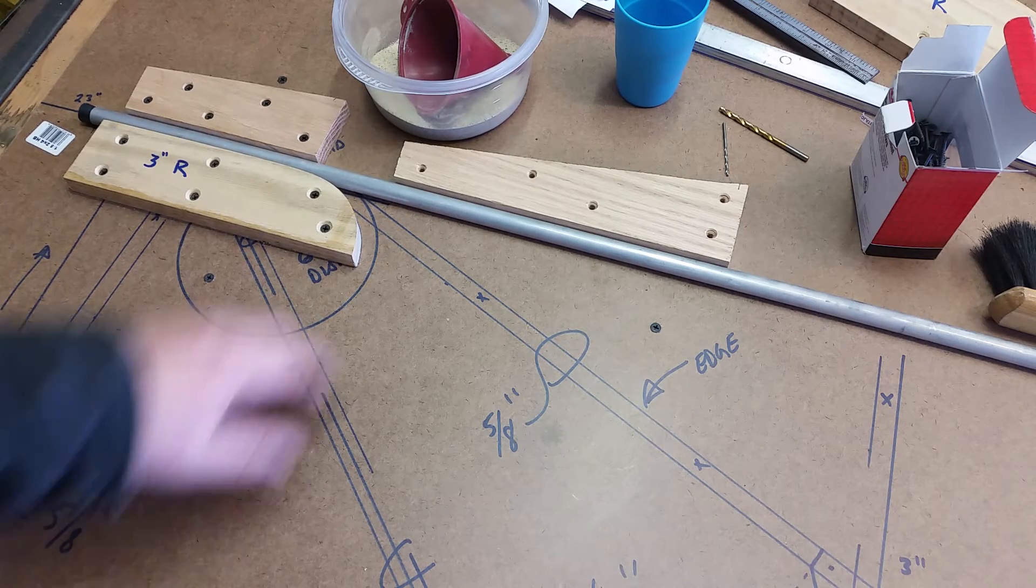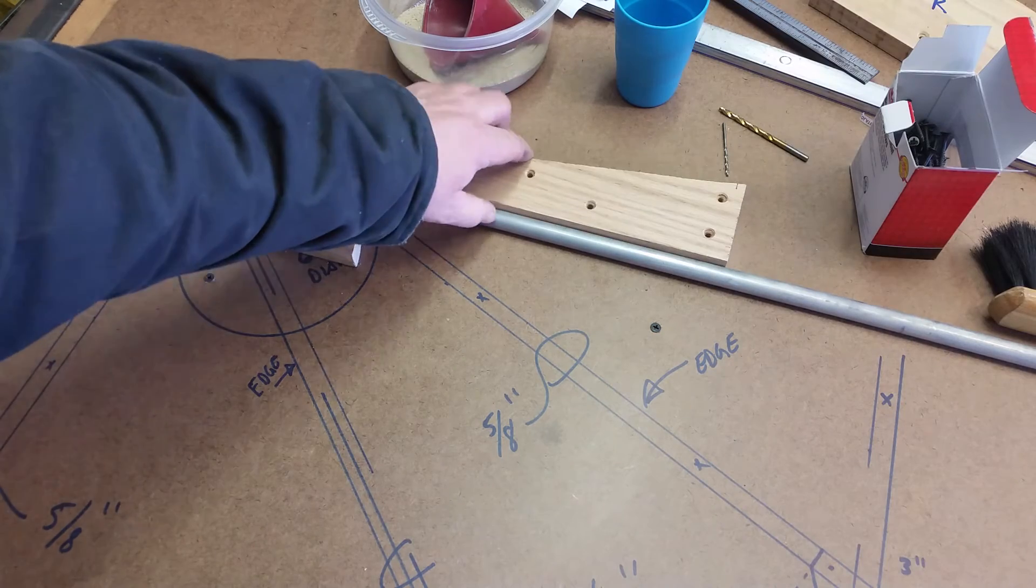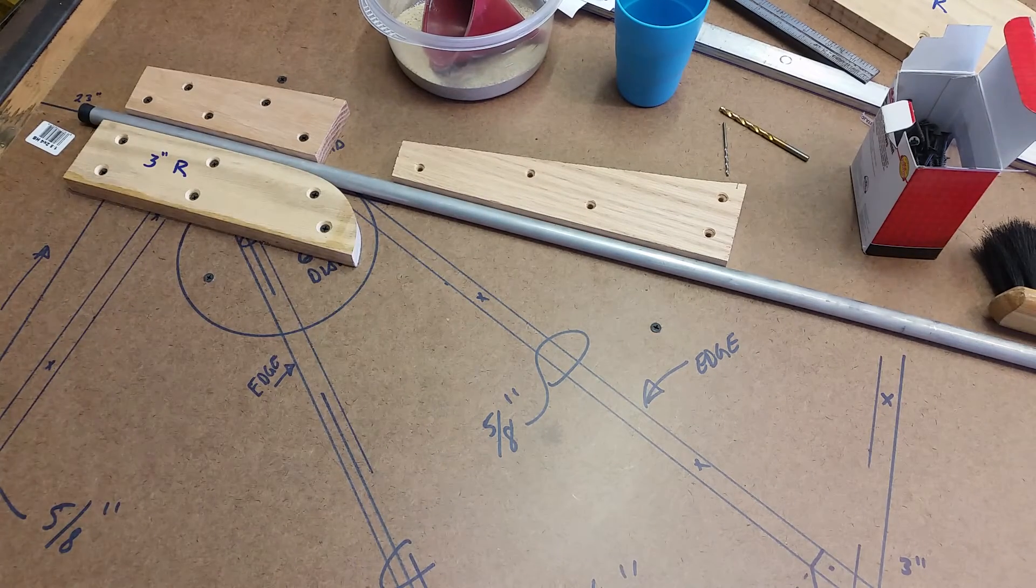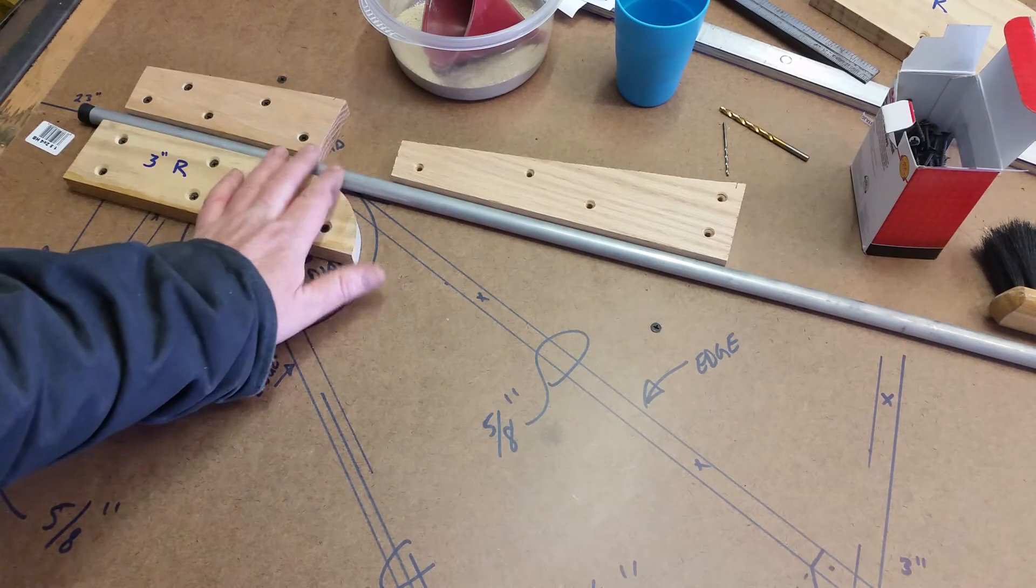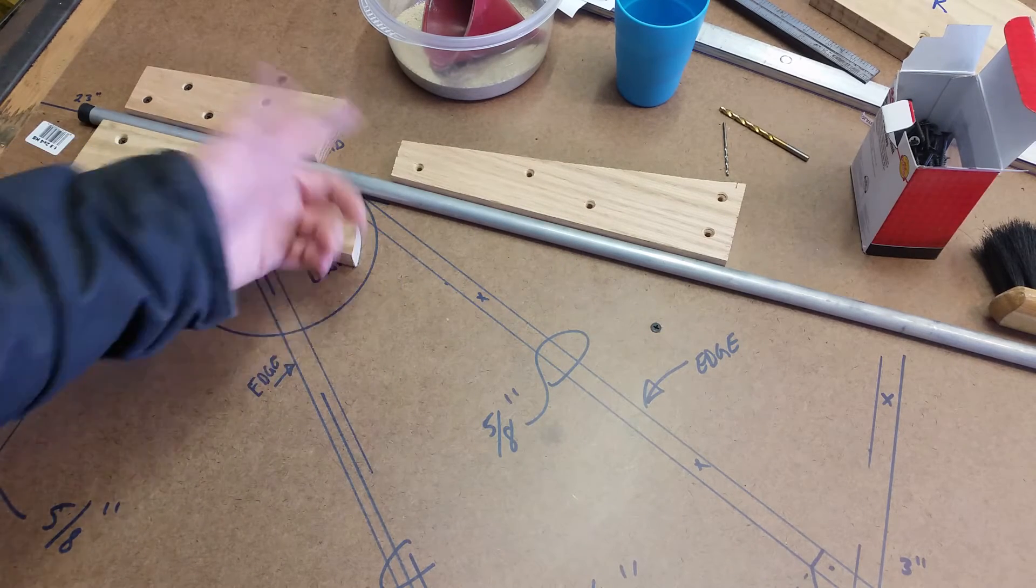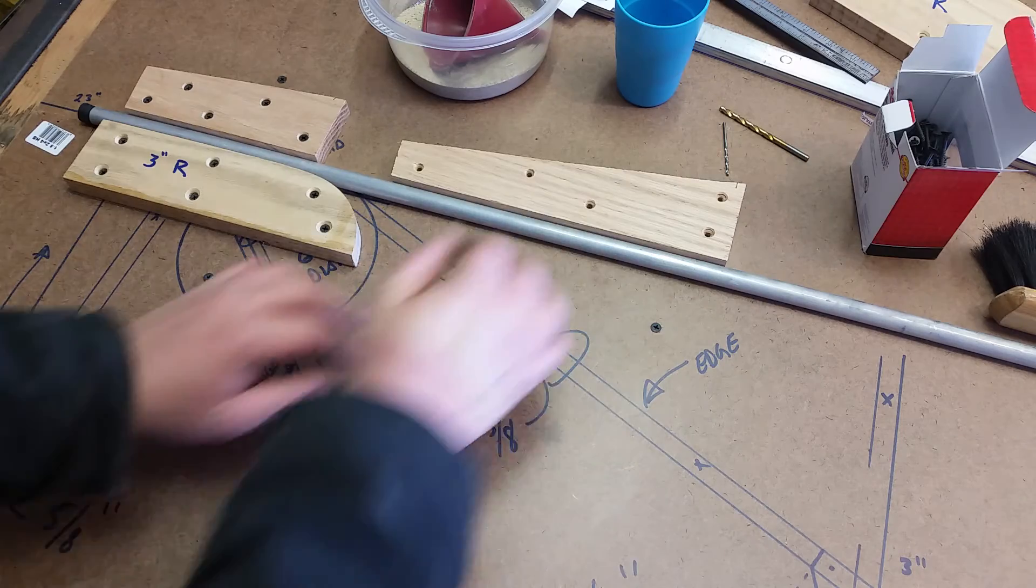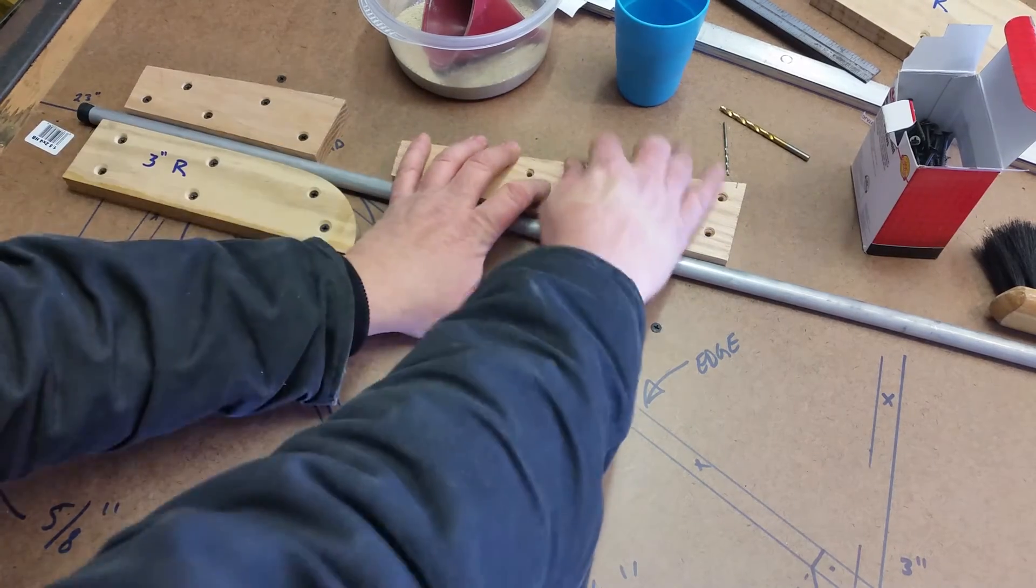When you're bending with something like this - this is a scrap piece of block we're going to use a little later - I'm just going to use this to push on it because I don't want to bend this. I want all the bend to happen here and we only have to go a little bit. So let's give it a shot. Here we go, let's see how that works.